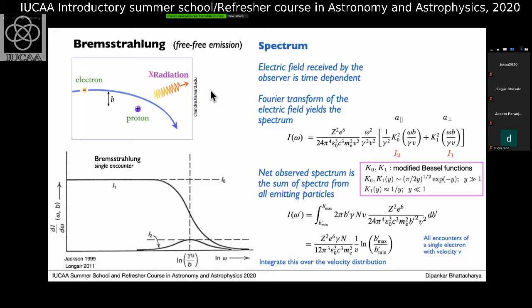At any given instant, we can write the Larmor formula with acceleration squared as a-parallel squared plus a-perpendicular squared. As the electron passes by, both quantities change because the distance between the electron and the proton changes, and also the angle between the current motion of the electron and the vector joining them changes. That time dependence of the acceleration causes a time dependence of the radiated electric field, and taking the Fourier transform of that time-dependent electric field gives us the spectrum of this radiation.